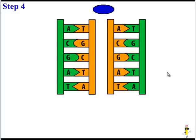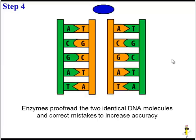Finally, in step four, to increase accuracy, some other enzymes are going to come along and proofread the new DNA molecules just to make sure that there were no mistakes. And if they do see mistakes, they'll go ahead and fix them.